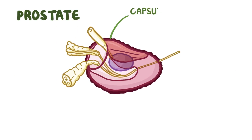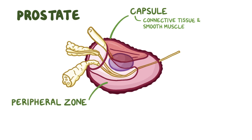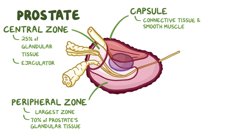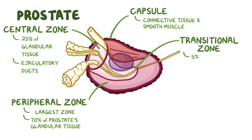The prostate is covered by a capsule of tough connective tissue and smooth muscle. Beneath this layer, the prostate can be divided into a few zones. The peripheral zone, which is the outermost posterior section, is the largest of the zones and contains about 70% of the prostate's glandular tissue. Moving inward, the next section is the central zone, which contains about 25% of the glandular tissue as well as the ejaculatory ducts that join with the prostatic urethra. Last is the transitional zone, which contains around 5% of the glandular tissue as well as a portion of the prostatic urethra.